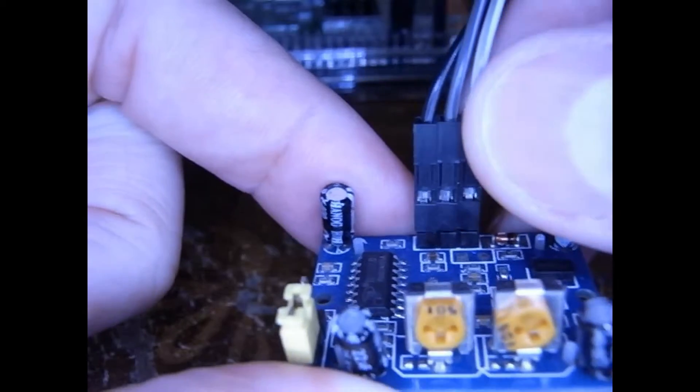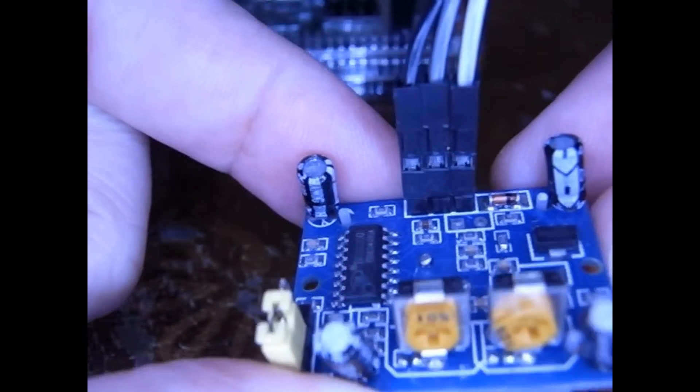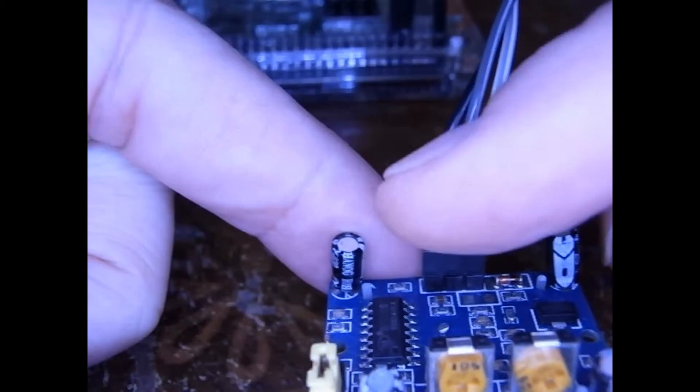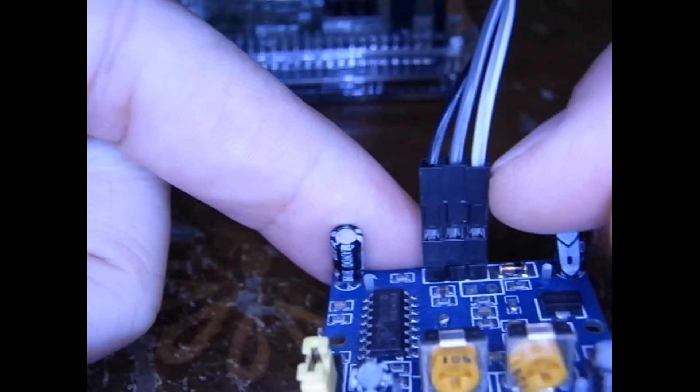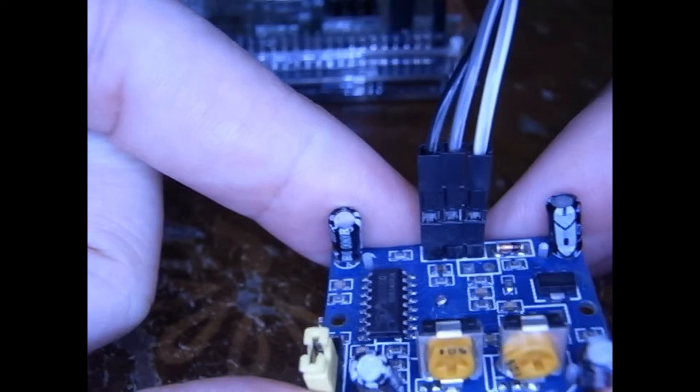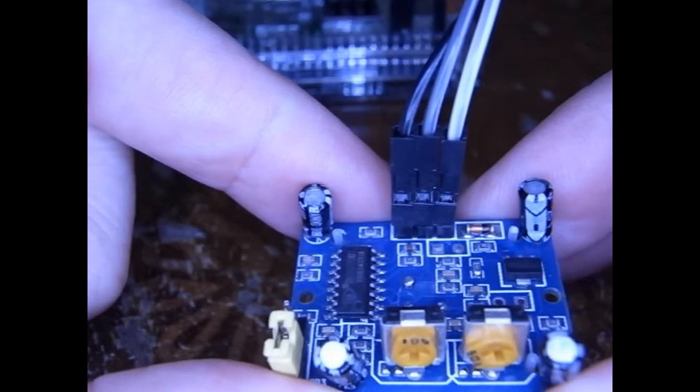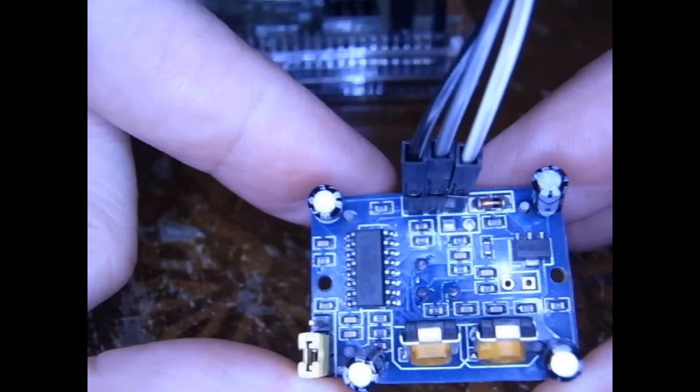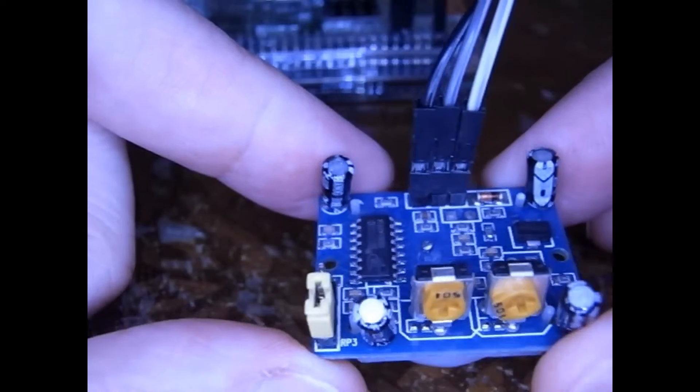And on the back here are the actual pins. The black is the ground. The power is the white and the gray I have used as the output. And that's it. Again, there's not much to this side of the board.